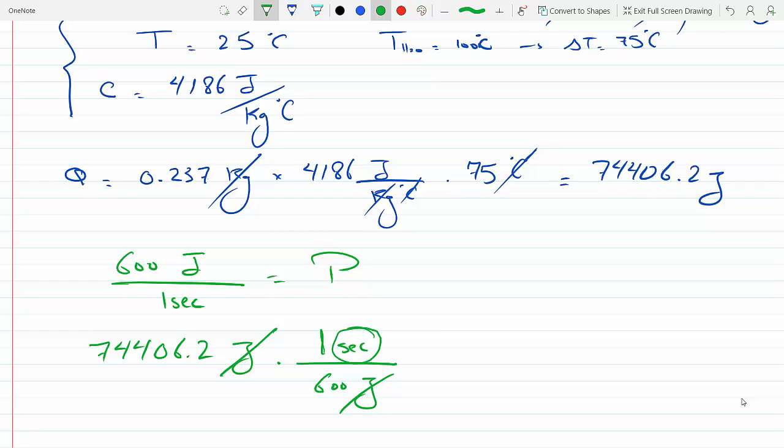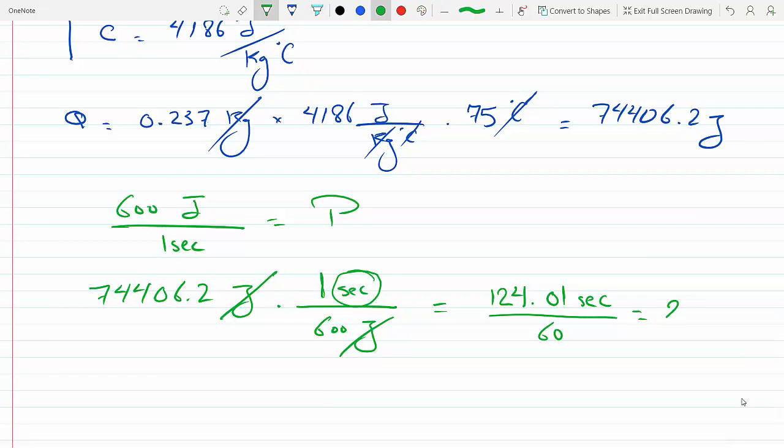This minimizes—if you really understand dimensional analysis in physics and how the units work out, that can save you a lot of memorization because a lot of these formulas can be intuitively reasoned out through units and other things. So this would be 124.01 seconds. Divide that by 60 to get it in minutes, and so this would take about 2.07 minutes.